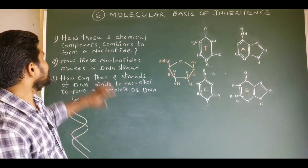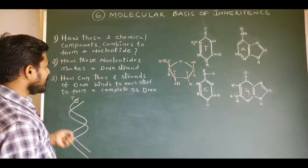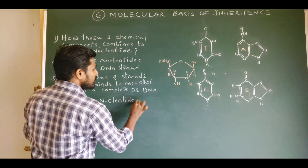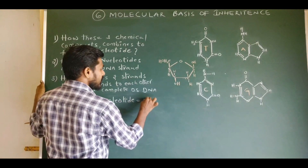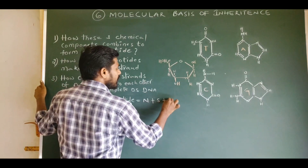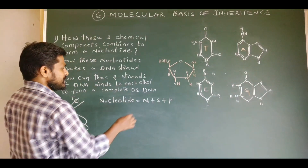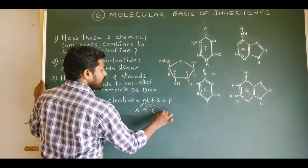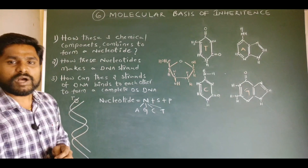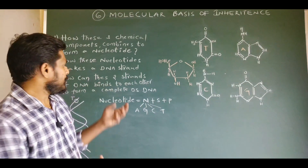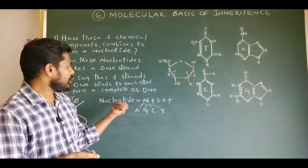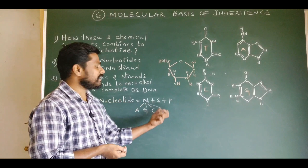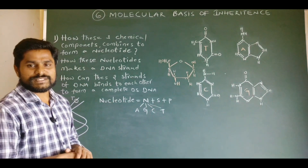Let us start with the first question. A nucleotide is the combination of three chemical components: a nitrogen base, a pentose sugar, and a phosphate group. The nitrogen base may be either adenine, guanine, cytosine, or thymine. A DNA molecule is made up of four types of nucleotides — having adenine, guanine, cytosine, or thymine as the nitrogen base.